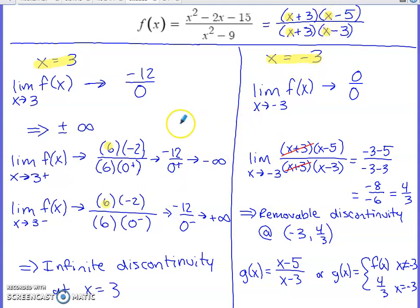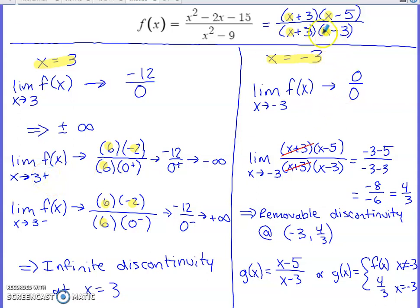From the right, a number slightly bigger than three — like 3.1 — gives 3.1 minus three slightly above zero, so positive. Doing the arithmetic: six times negative two is negative 12 in the numerator; six times a small positive is a small positive in the denominator. A negative divided by a positive is negative, and since the denominator approaches zero, the result is negative infinity on the bigger side of three.